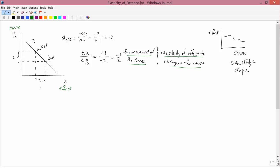From now on, what I'm really interested in is measuring the sensitivity of effect to changes in the cause. There's a certain disadvantage in measuring it by the reciprocal of the slope. And that has to do with dimensions. Suppose that this is the demand for apples. Then delta x would be pounds of apples. Pounds is abbreviated LB or LBS. And px in the US would be dollars per pound.